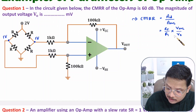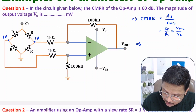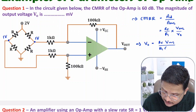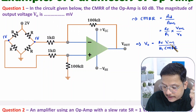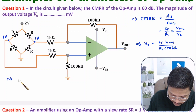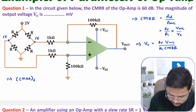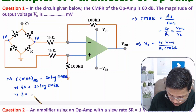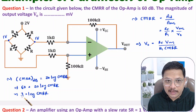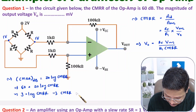Based on this, we can calculate V0. Rearranging the CMRR formula: V0 = (Rf × Vcm) / (R1 × CMRR). Now, CMRR is given as 60 dB, so we convert it: CMRR in dB = 20 log(CMRR). Therefore 60 = 20 log(CMRR), which gives log(CMRR) = 3, so taking antilog, CMRR = 10³.